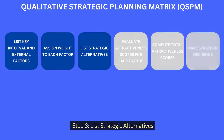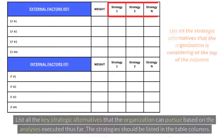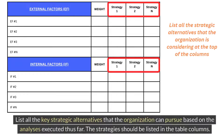Step 3: List Strategic Alternatives. List all the key strategic alternatives that the organization can pursue based on the analyses executed thus far. The strategies should be listed in the table columns.